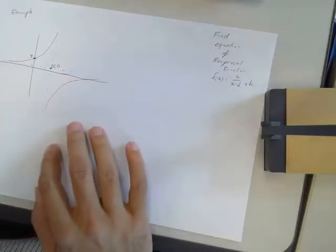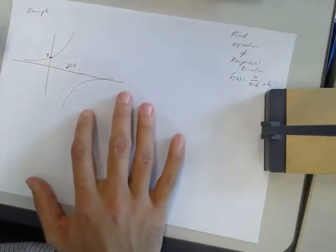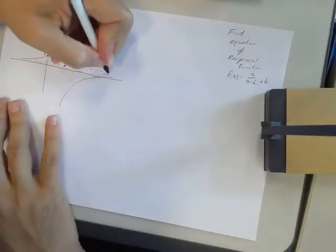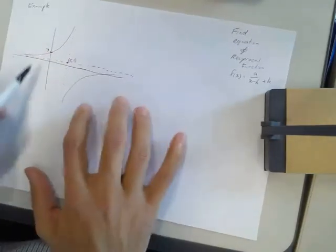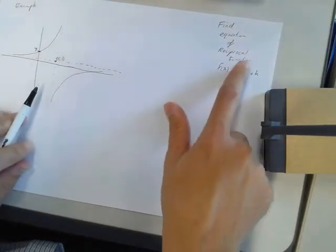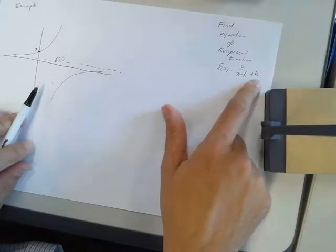So in this video I'm going to be finding the equation of a reciprocal function from a sketch. Now this is a pretty poor sketch that I've done earlier. You can see here's my sketch, and I'm going to write it in the form A on x minus h plus k.